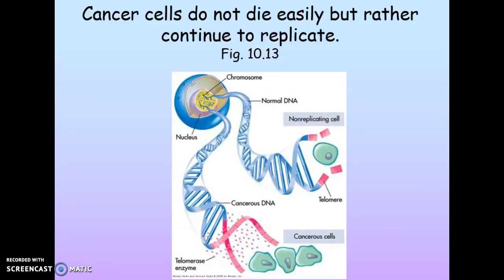One characteristic of cancer cells is continued replication. This figure shows telomeres — the pink components at the end of each chromosome. After each cellular replication, the telomere will shorten just a bit. After many replications, the telomere will be gone, and that will trigger the cell to stop dividing. This occurs in older cells, and mutations also accumulate over time. But once the telomeres are gone, the cell stops dividing and undergoes death, so those mutations go away because that cell goes away.